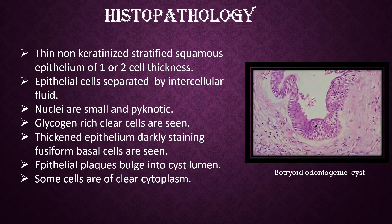Histopathology: Thin non-keratinized stratified squamous epithelium of 1 or 2 cell thickness. Epithelial cells are separated by intercellular fluid. Nuclei are small and pyknotic. Glycogen-rich clear cells are seen. Thickened epithelium with darkly staining fusiform basal cells are seen. Epithelial plaques bulge into the cyst lumen, and some cells have clear cytoplasm.